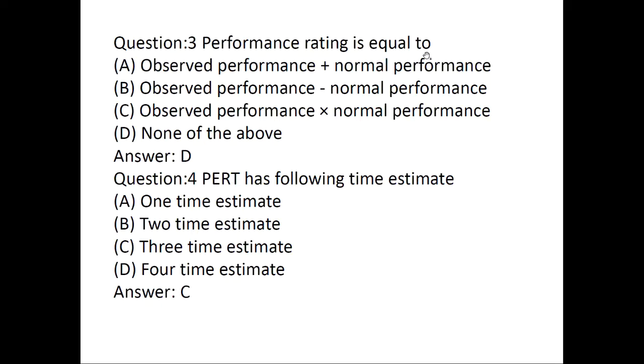Performance rating is equal to observed performance plus normal performance, observed performance minus normal performance, observed performance into normal performance, or none of the above. PERT uses three time estimates: optimistic time, pessimistic time, and most likely time.